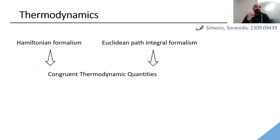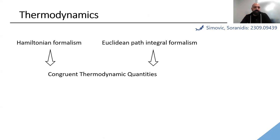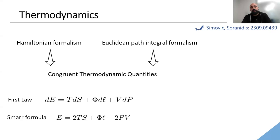We now proceed to thermodynamics. Black holes have thermodynamic properties that likely originate from some microscopic description of degrees of freedom. With Phil Simovic, we used Hamiltonian formalism and Euclidean canonical formalism, deriving consistent thermodynamic quantities for regular black holes. There has been much conflicting literature on the proper thermodynamic quantities, but here we proved consistency. We also showed they satisfy a first law and a Smarr formula.